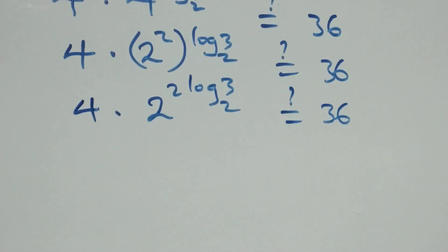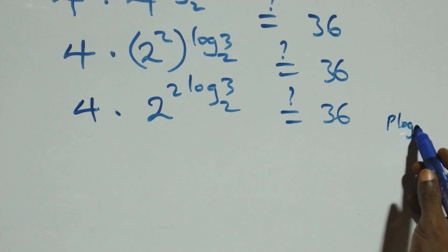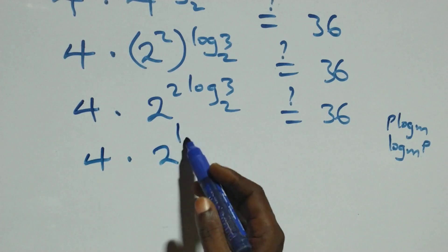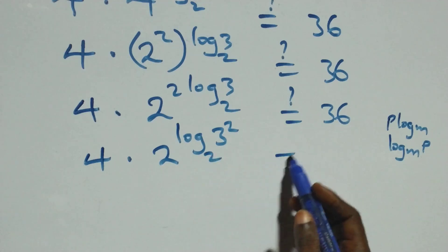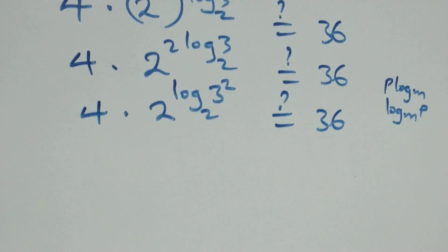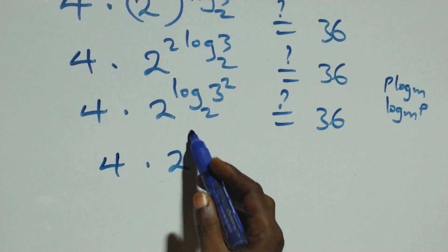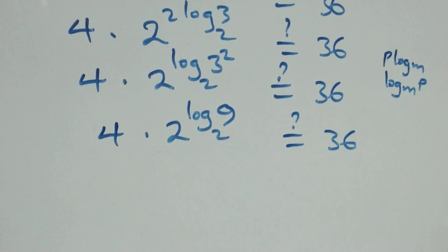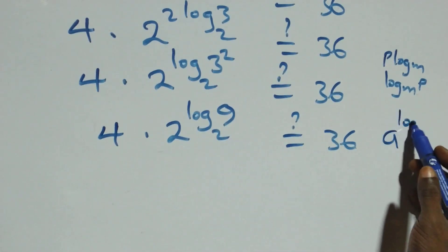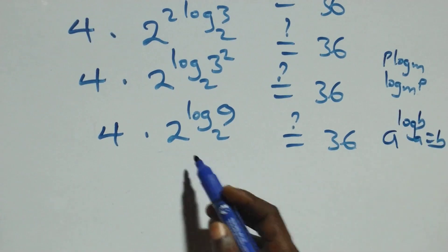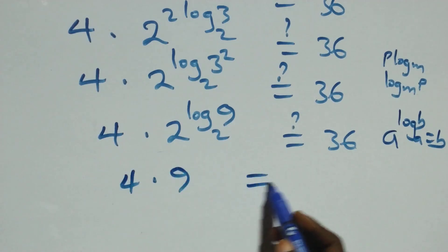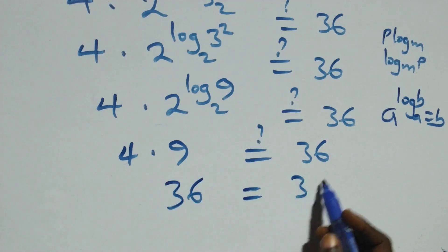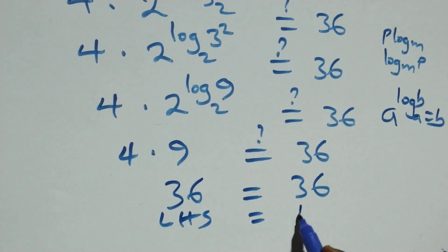Then we reverse the power rule of logarithms: when we have p log m, this is the same thing as log m raised to power p. So we have 4 times 2 raised to power log 3 squared base 2, equal to 36. That becomes 4 times 2 raised to power log 9 base 2, equal to 36. This follows the law of logarithms: when we have a raised to power log b to base a, this equals b. Then here we have 9, which implies 4 times 9 equals 36. And 4 times 9 gives us 36, which equals 36 on this side. Left hand side equals the right hand side.